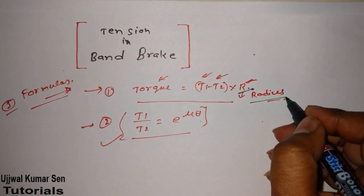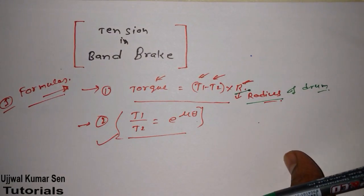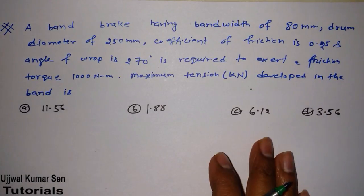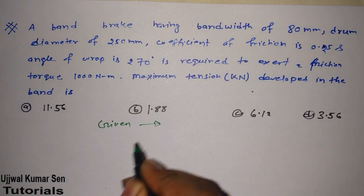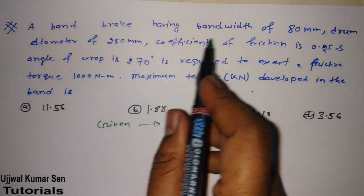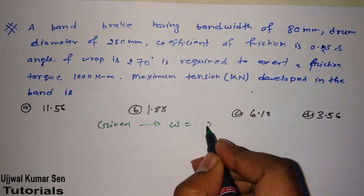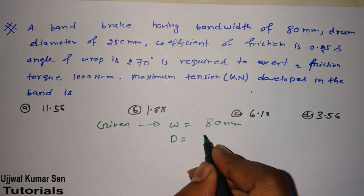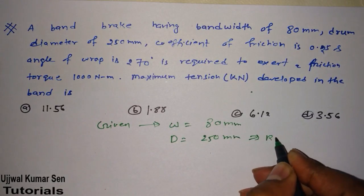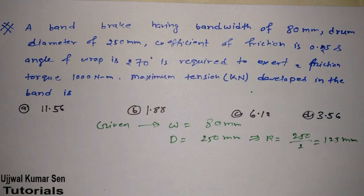So first of all, we have to read the question. And with reading, we have to write given. What we have given in the question. So a band brake having bandwidth of this. So we are having bandwidth is 80. So bandwidth W is equal to 80 mm. And diameter, let's say 250 mm. Therefore, we can say radius is 250 by 2, 125 mm.